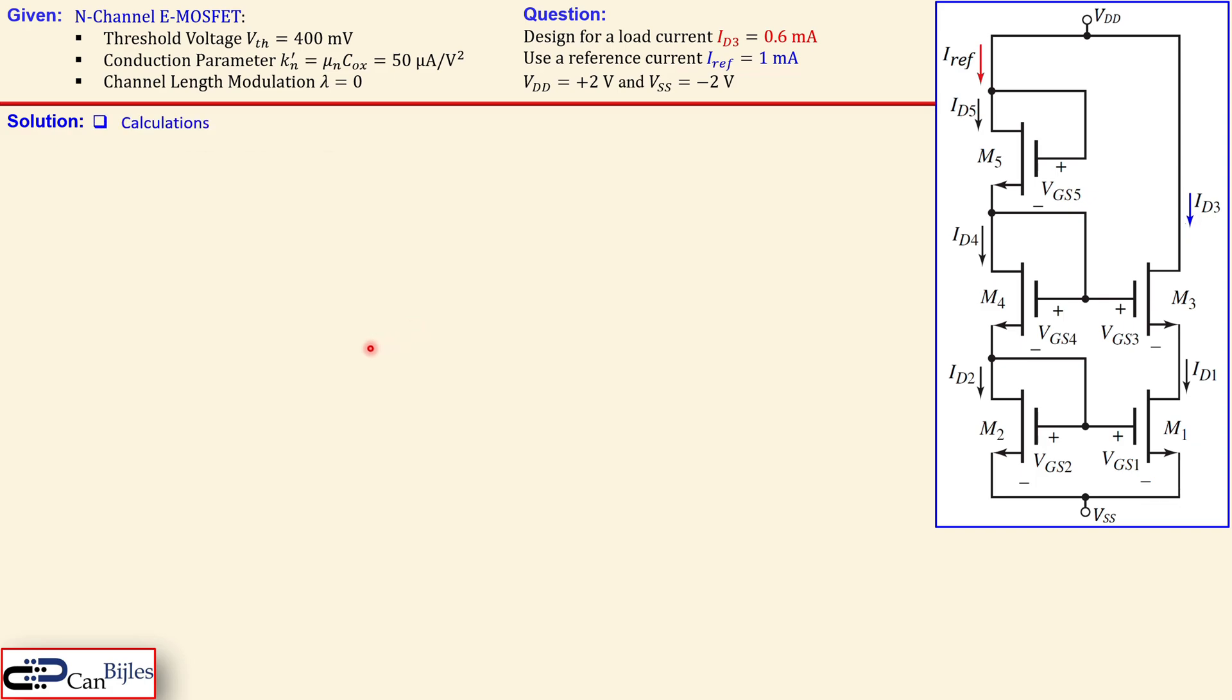The solutions we start first with the calculations. Now we start first selecting or setting an overdrive voltage for our N3 transistor which is here at the load current. So we set an overdrive voltage of 0.4.